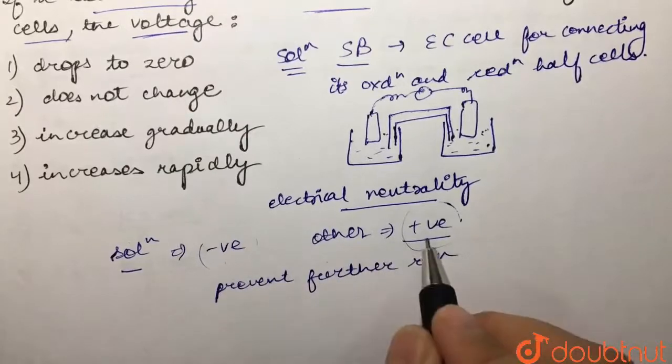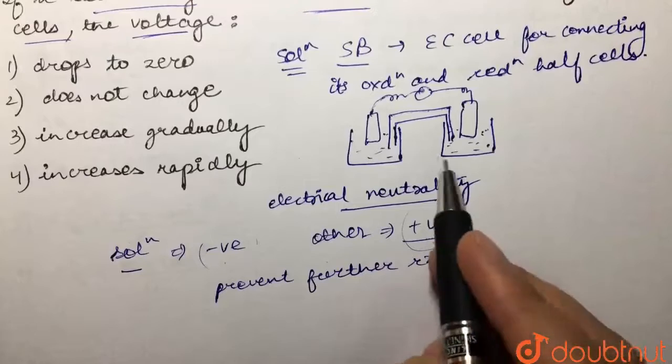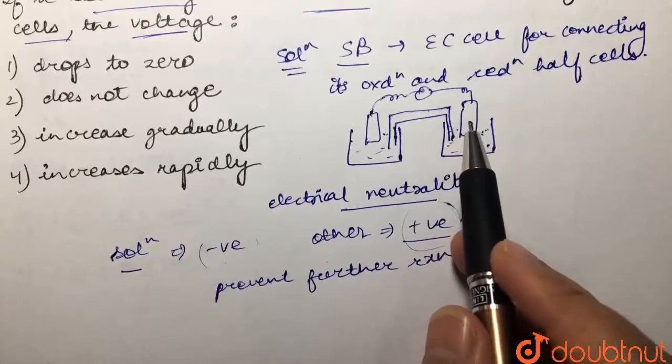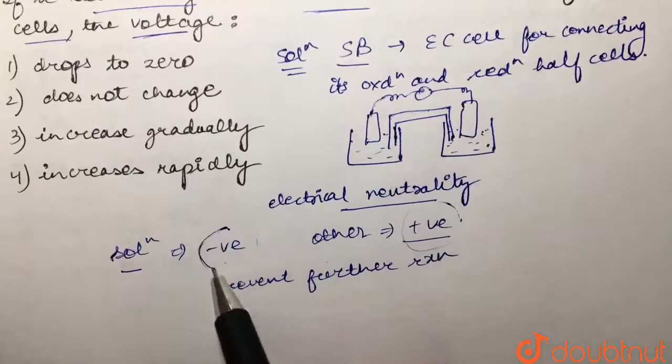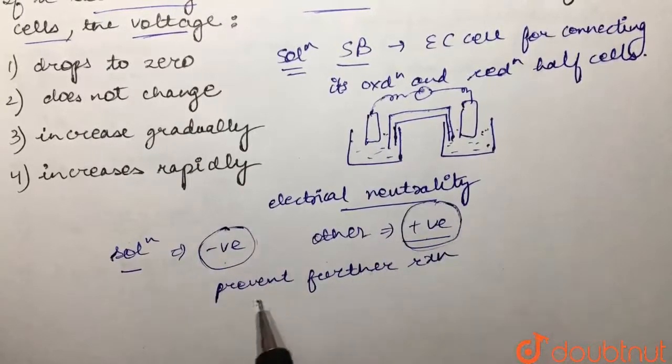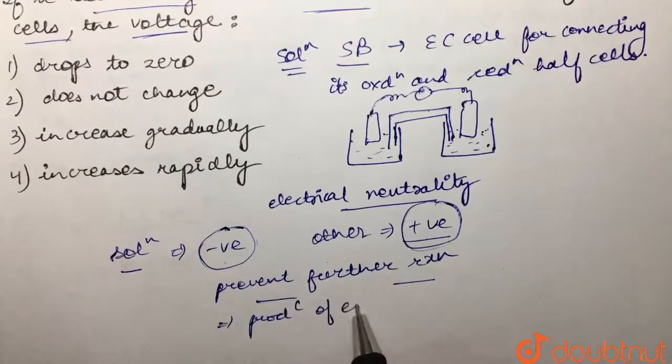preventing the accumulation of these charges? Because we have removed the salt bridge that maintains electrical neutrality. So if we remove the salt bridge, there would be accumulation of negative and positive charges that would prevent further reaction, and hence the production of electricity. It's going to